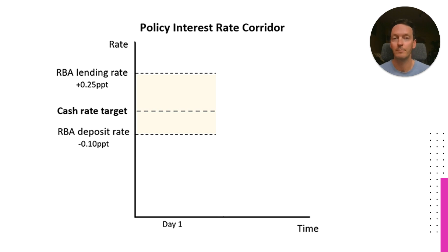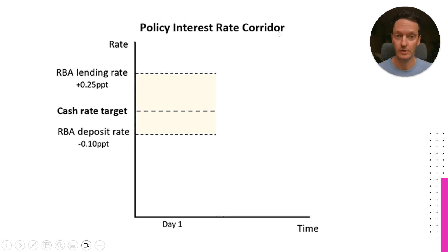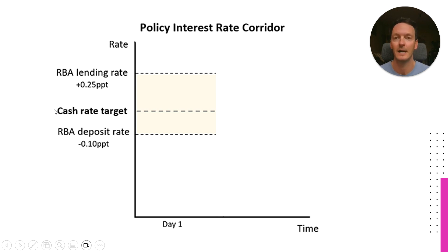We're going to stick with this kind of format of the chart. When analyzing a chart, we always start at the heading — and this is called the policy interest rate corridor, which is what we're going to explain here. The first thing I want you to have a look at is this cash rate target.